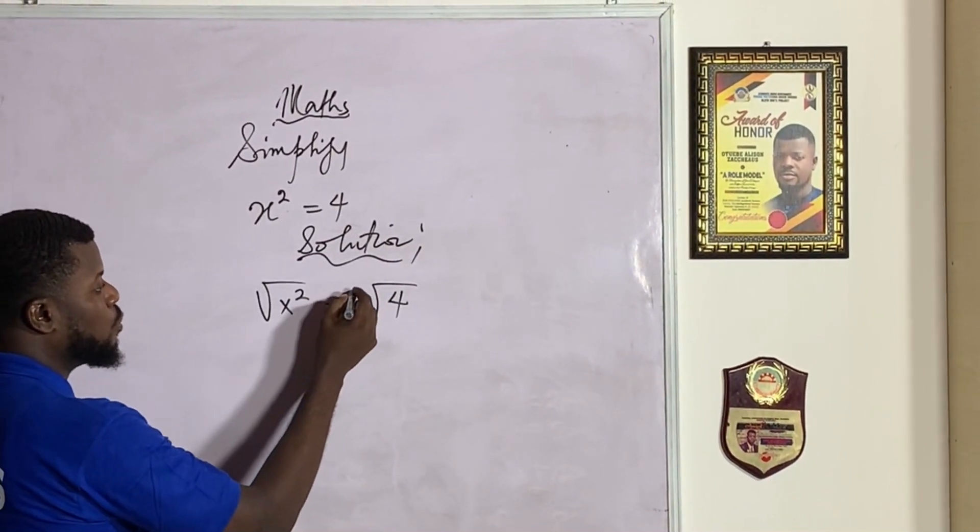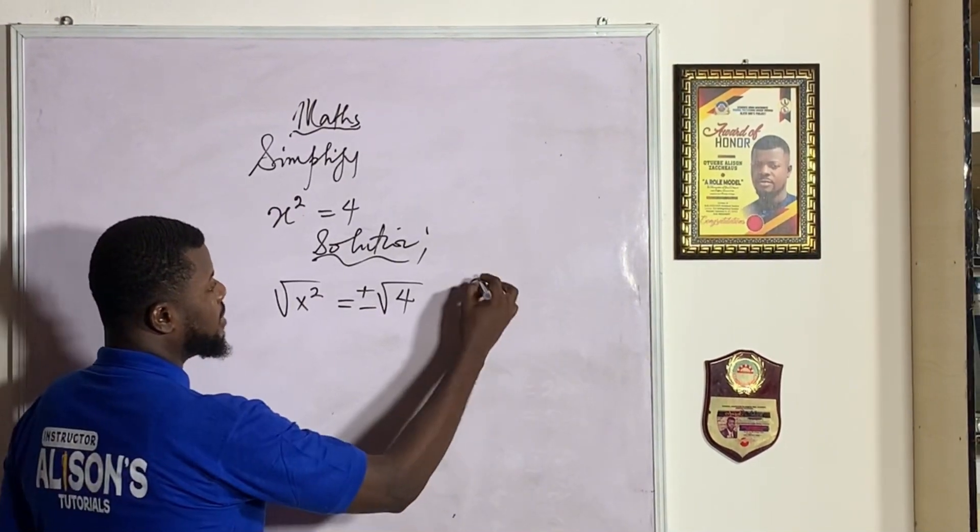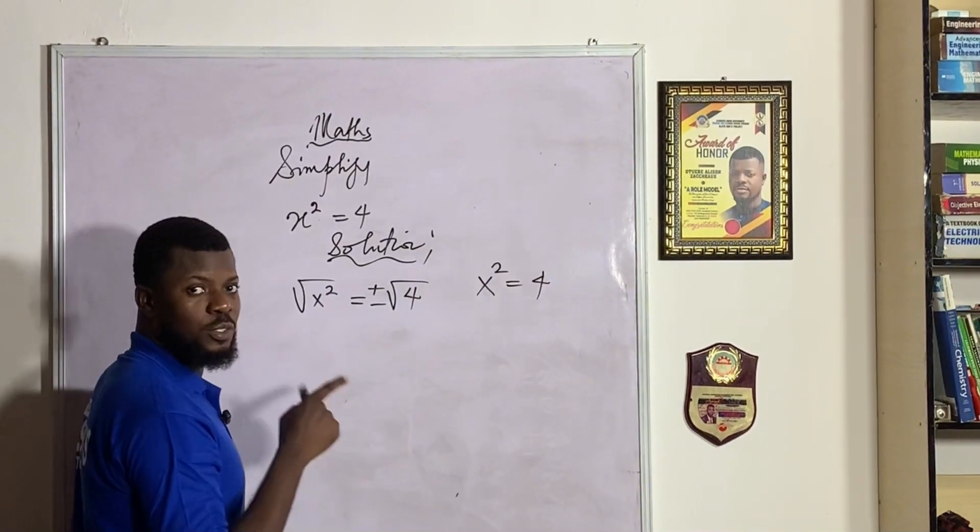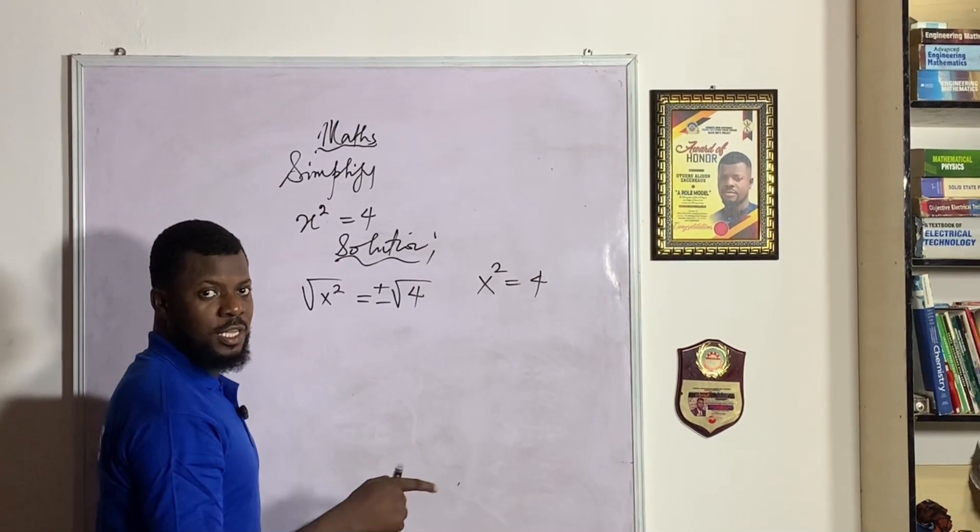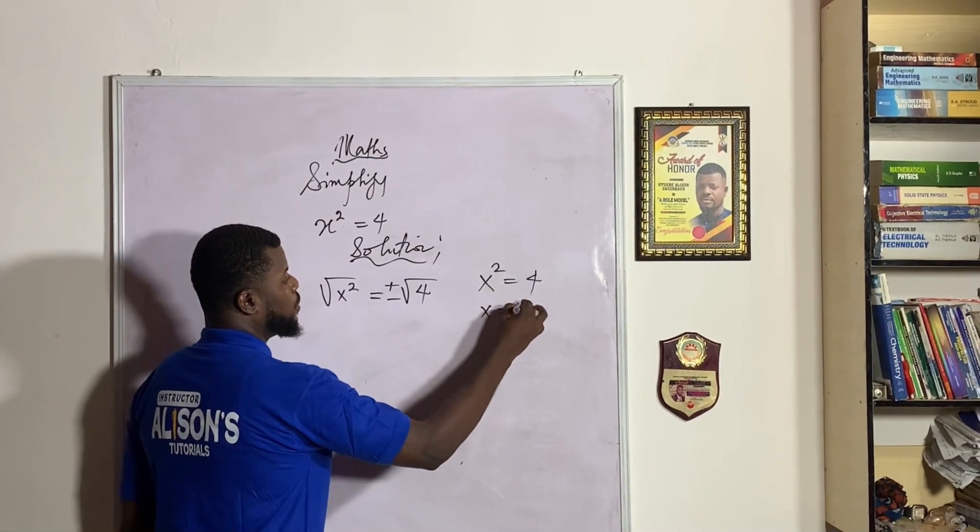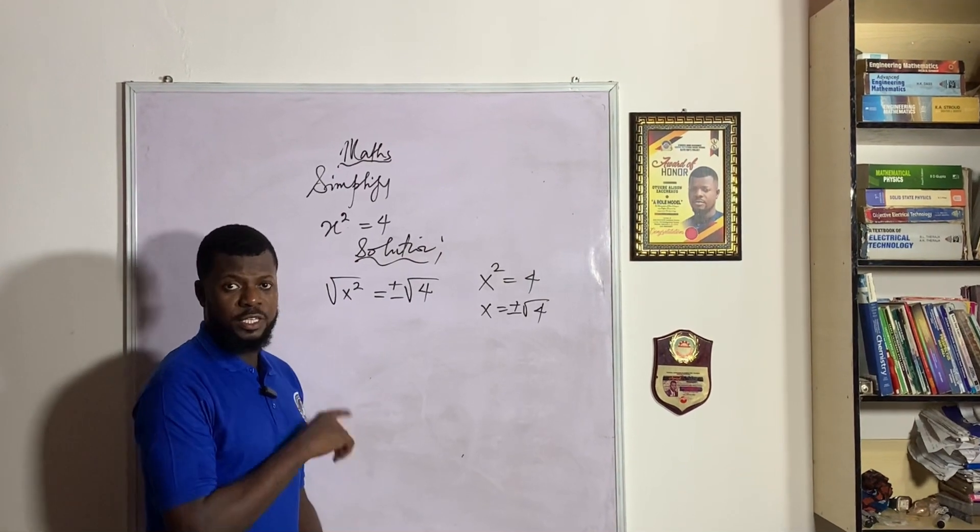But then this right side will go with a plus or minus. Just like the way you easily see if you have x squared equal to 4, if you're taking this squared across to the right-hand side, it changes to plus or minus the square root of 4, which is x equal to plus or minus the square root of 4. So I'm just using the conventional way of taking the square root of both sides.